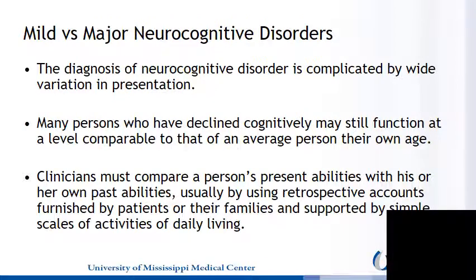The diagnosis of neurocognitive disorder is complicated by wide variation in presentation, and it exists on a continuum. Often, it is difficult to distinguish whether an individual falls in the mild or the major neurocognitive disorder category. Moreover, there can be progression from mild to major during the course of an illness. Many persons who have declined cognitively may still function at a level comparable to that of an average person their own age, which further makes diagnosis difficult. Clinicians must compare a person's present abilities with his or her own past abilities, usually by using retrospective accounts furnished by patients or their families, and supported by simple scales of activities of daily living.